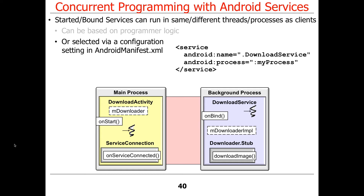In the manifest file, you add the attribute android:process and give it whatever name you want for the process. This says that when the service — in this case the download service — is launched, it will run in a background process separate from the activity's process. We'll talk in a moment about why you would do that.